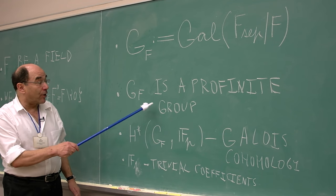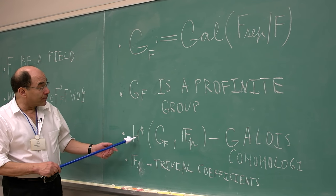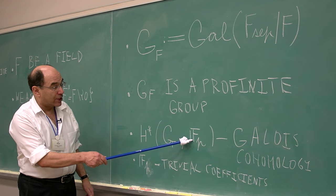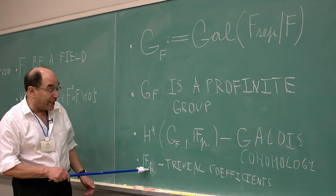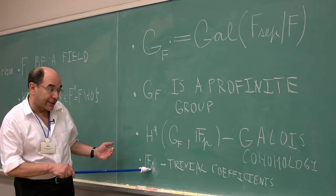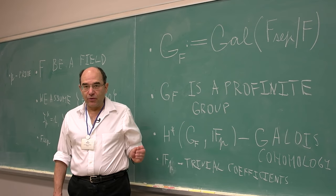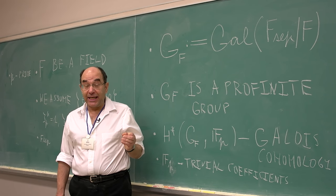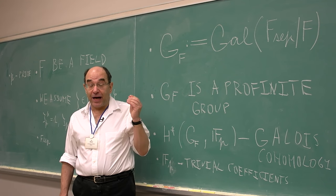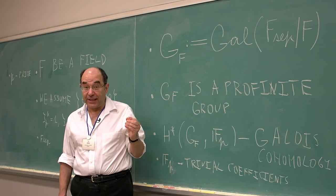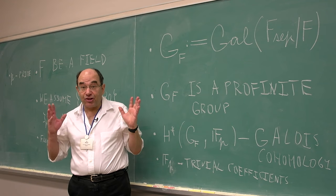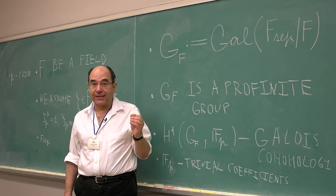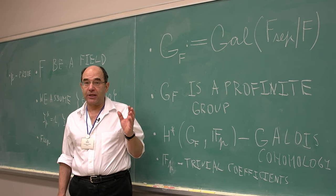G F is a profinite group, and cohomology of this group G F with FP coefficient is Galois cohomology, where FP is trivial. As you know, a huge problem which humanity faces today is the characterization of absolute Galois group above other profinite groups. By writing Schreier's theorem, we know that each non-trivial subgroup of absolute Galois group has order two.